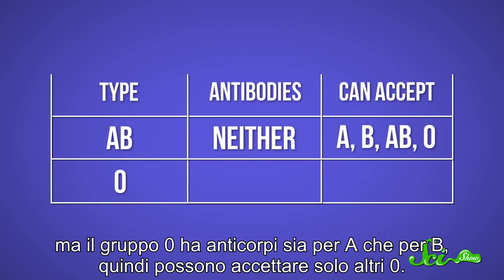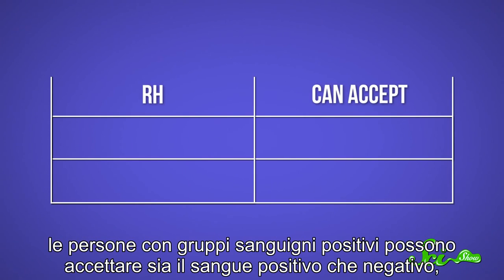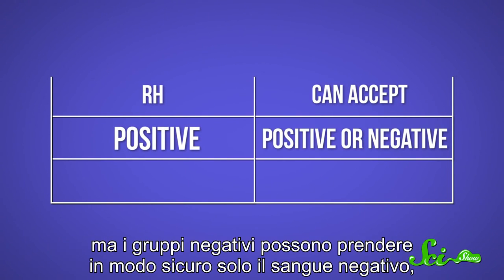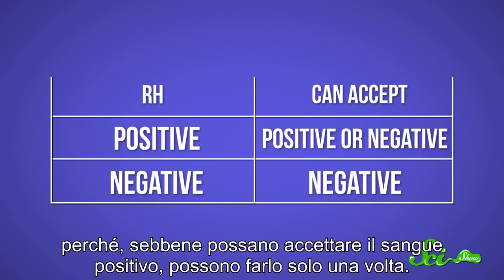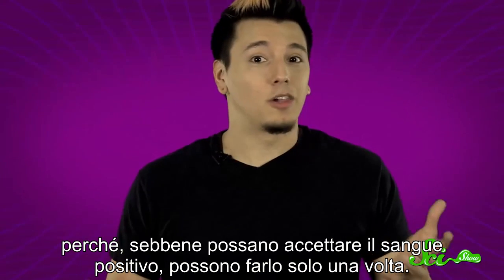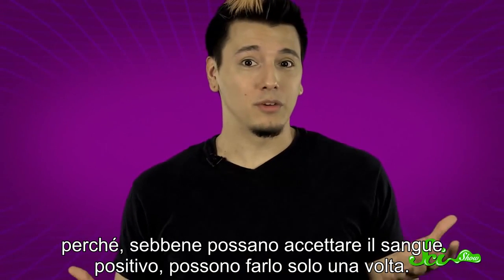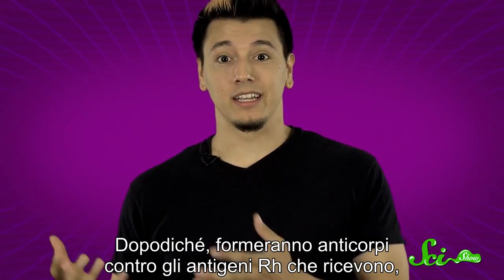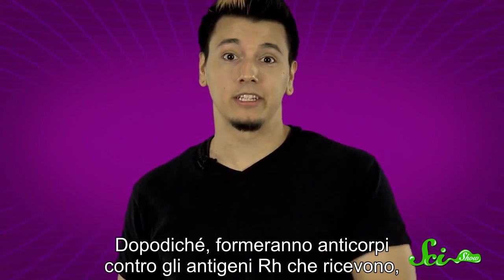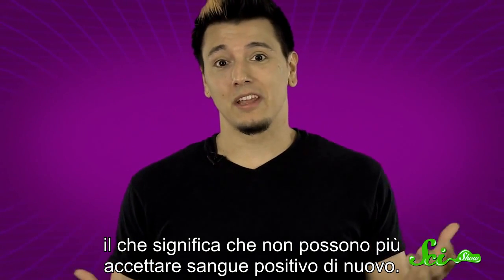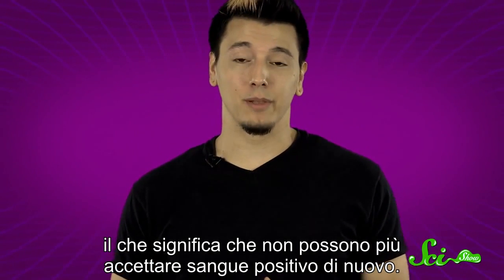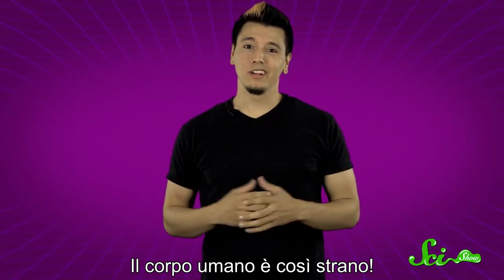But type O's have both A and B antibodies, so they can only accept other O's. And as for the RH antigens, people with positive blood types can accept either positive or negative blood. But negative types are safest taking only negative blood, because while they can tolerate positive blood, they can do it only once. After that, they'll form antibodies against the RH antigens that they received, which means they can never accept positive blood again. The human body is so weird.